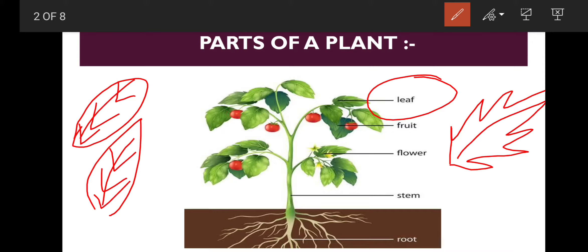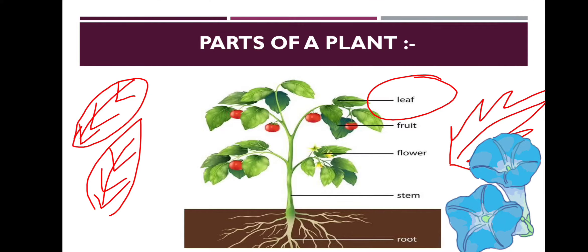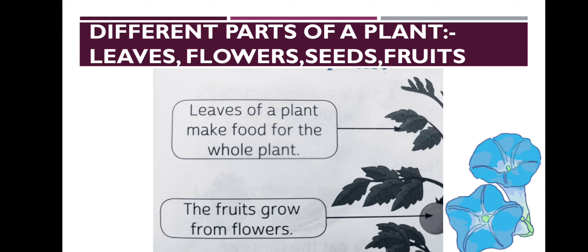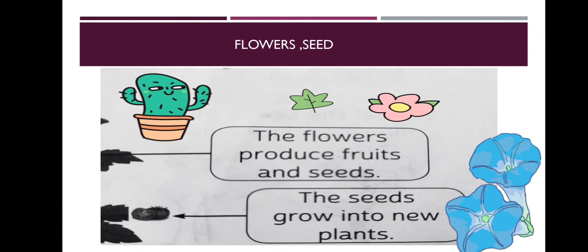So if we talk about the next part of the plant, before going to the fruit we will discuss the flower, because flowers generate fruit later. So the flowers produce fruits and seeds.